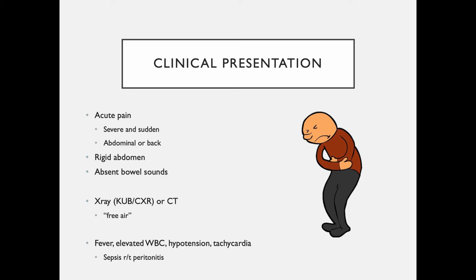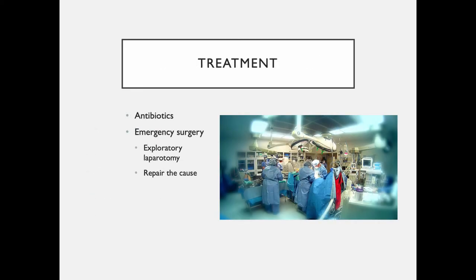One finding we look for on X-ray or CT scan is free air in the abdomen — you're not supposed to have free air in the belly. Free air typically means there's a perforation, though it could also be from ischemic gut. If untreated, this leads to sepsis and death. Treatment includes antibiotics, exploratory laparotomy, and fixing the underlying problem, whether it's an ulcer in the stomach or duodenum or a dehisced anastomosis site.